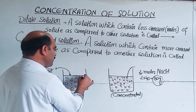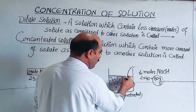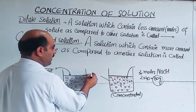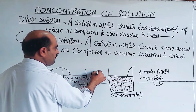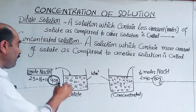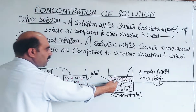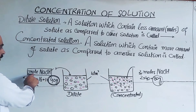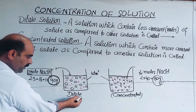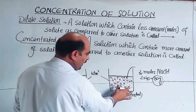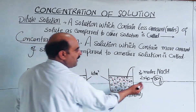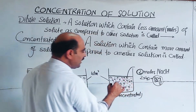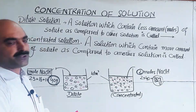Both have the same total volume — one decimeter cube each. In the solution with less number of moles of solute, that is a dilute solution. In the other solution, which has more amount of solute or number of moles of solute, that is known as a concentrated solution.